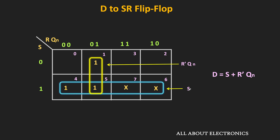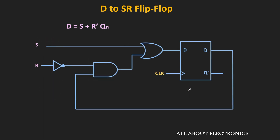And this is how we can design the corresponding circuit. With the help of one NOT gate, we can get R'. Using an AND gate, we will get R'·Qn. And then, with the help of an OR gate, we can get this expression. In this way, we can convert the D flip-flop into the SR flip-flop.